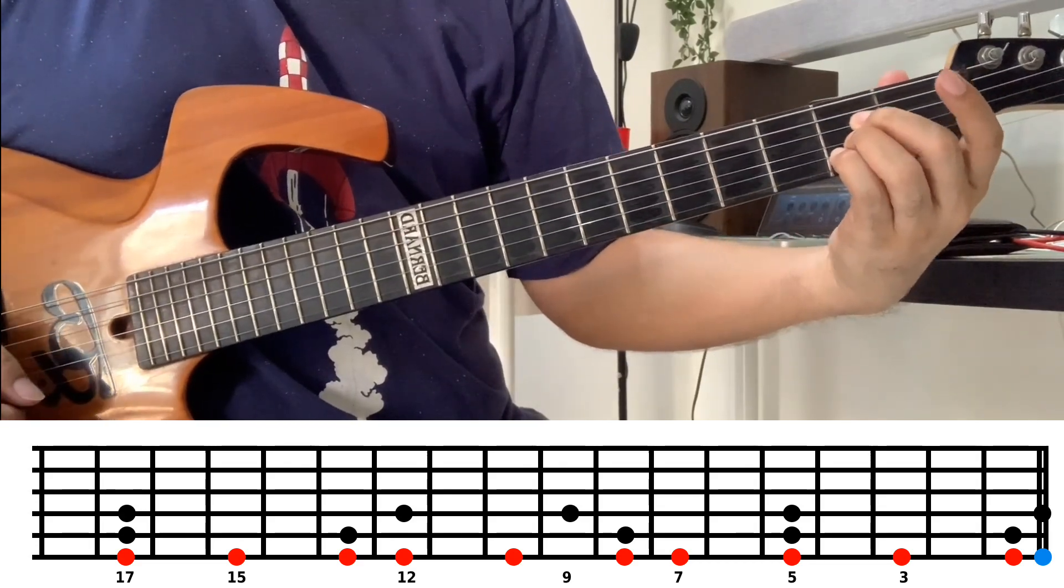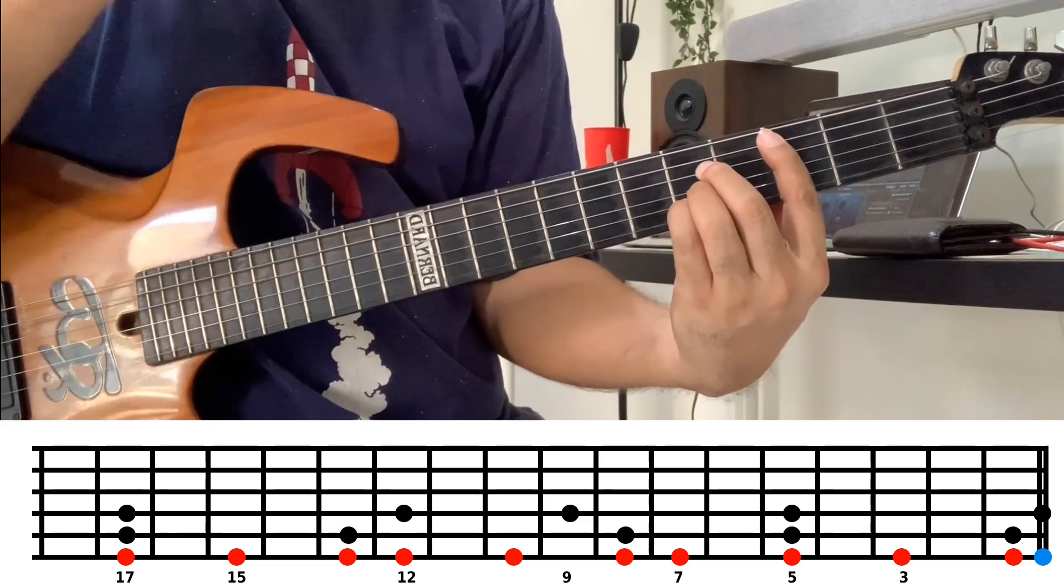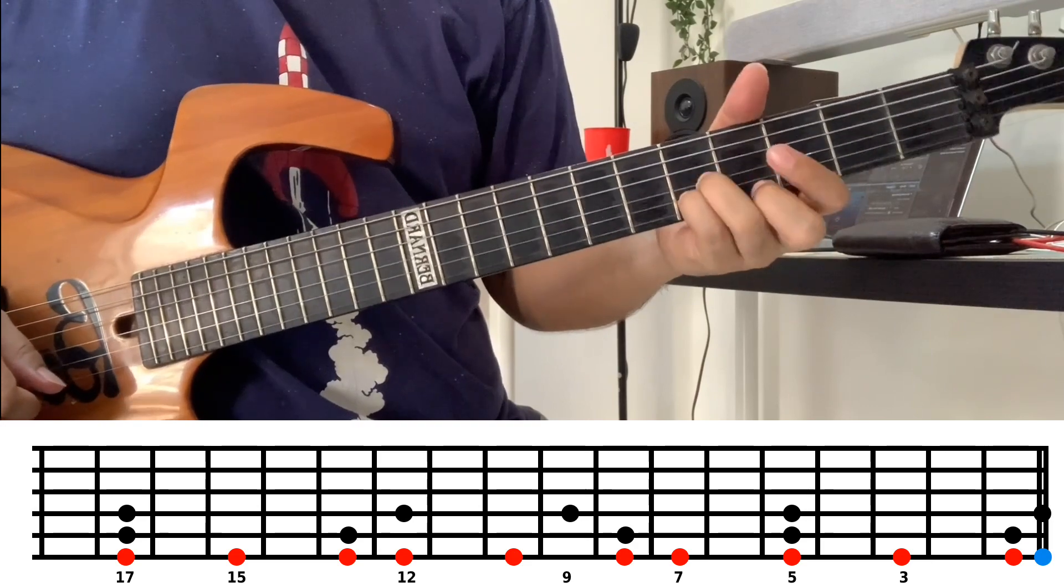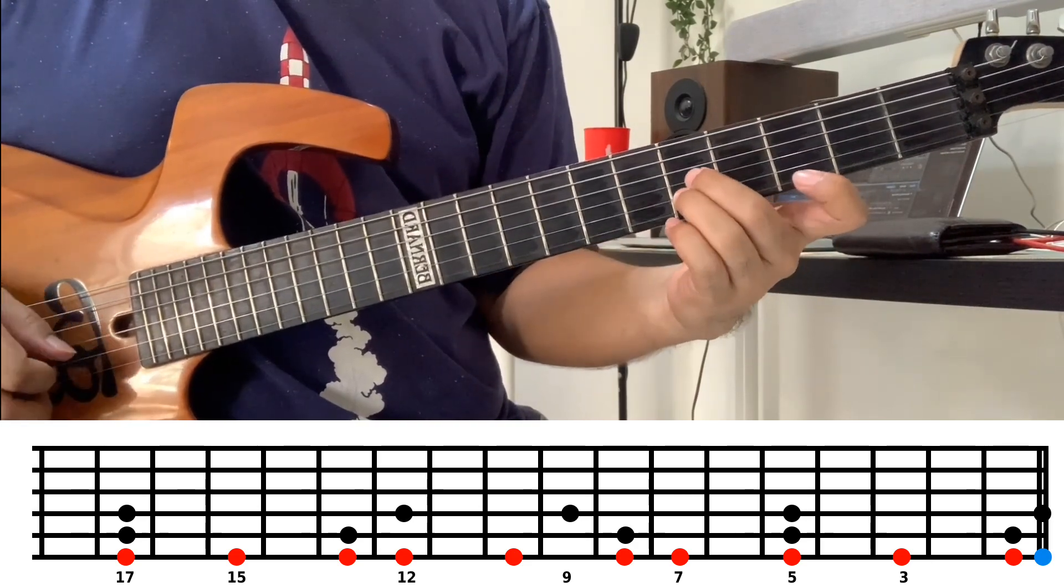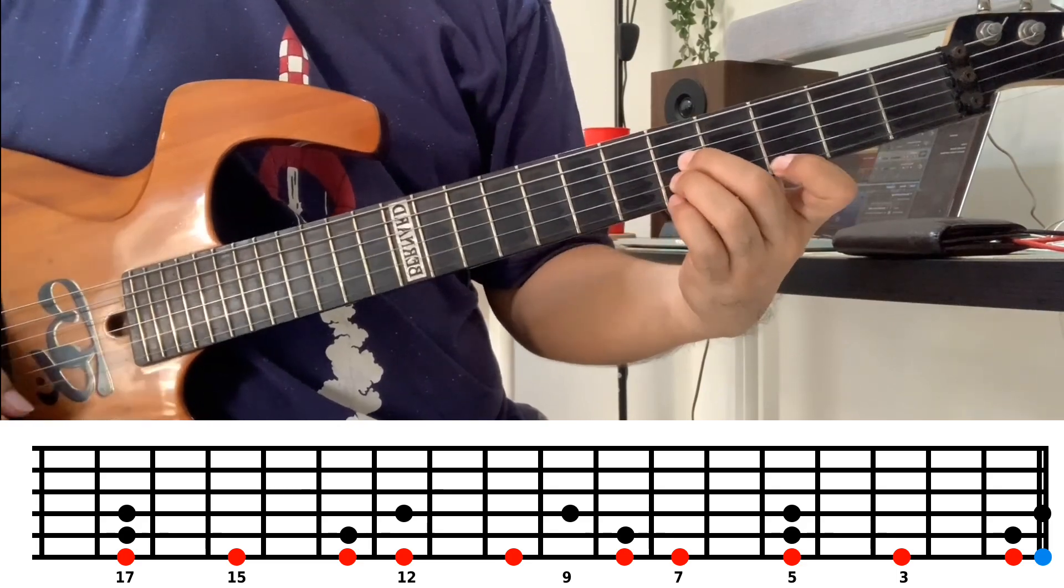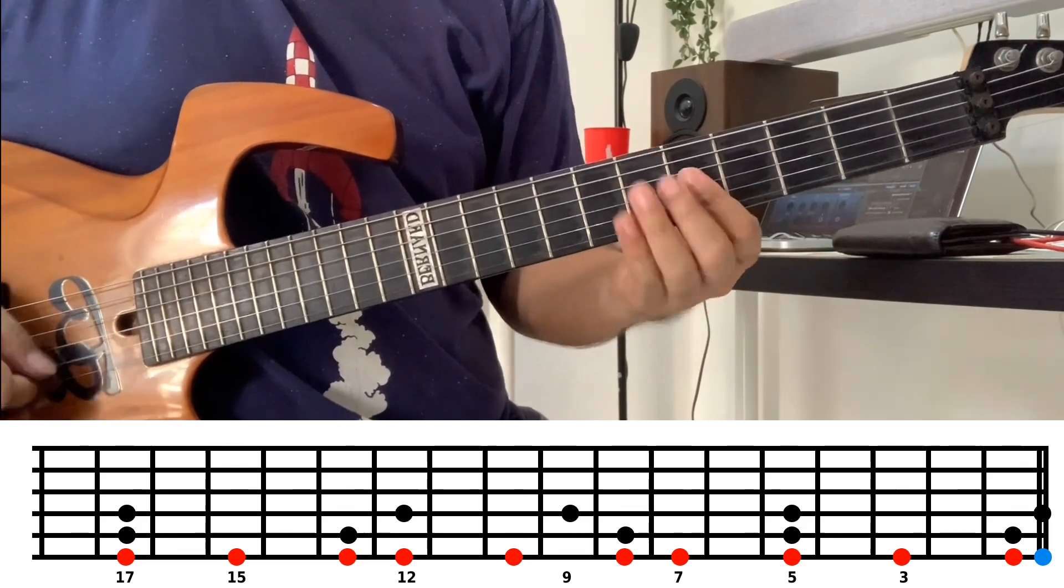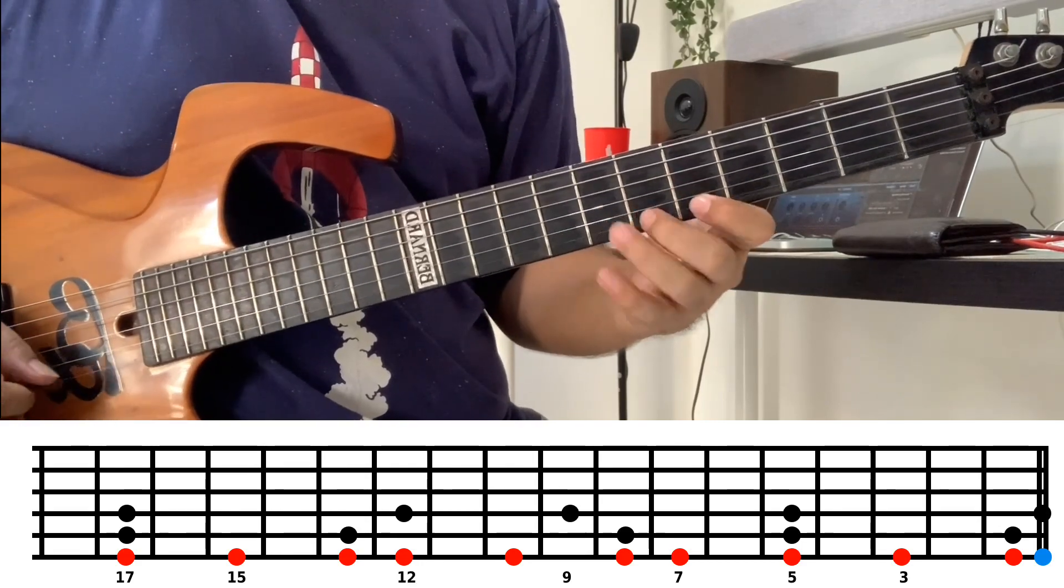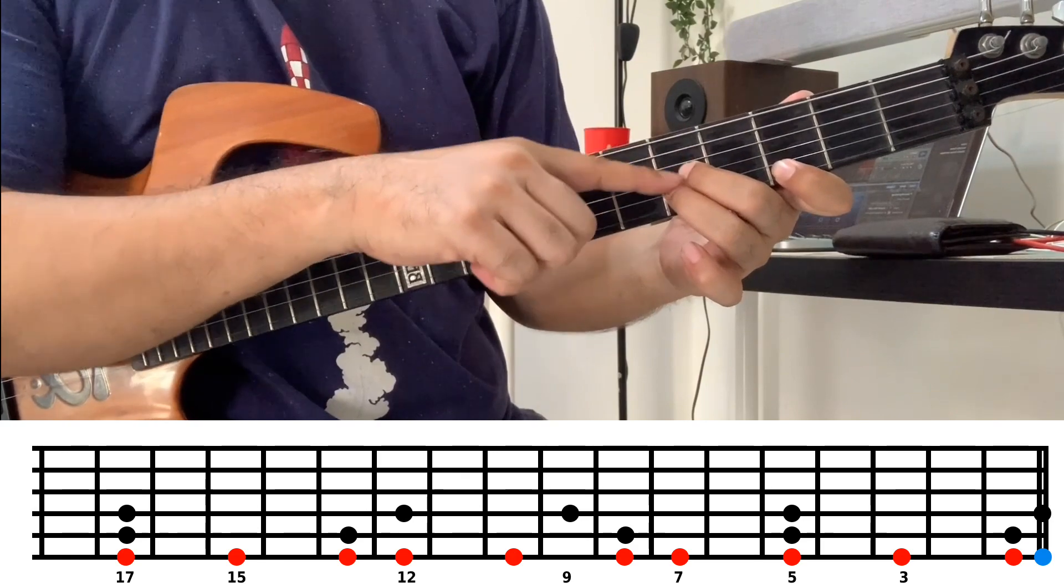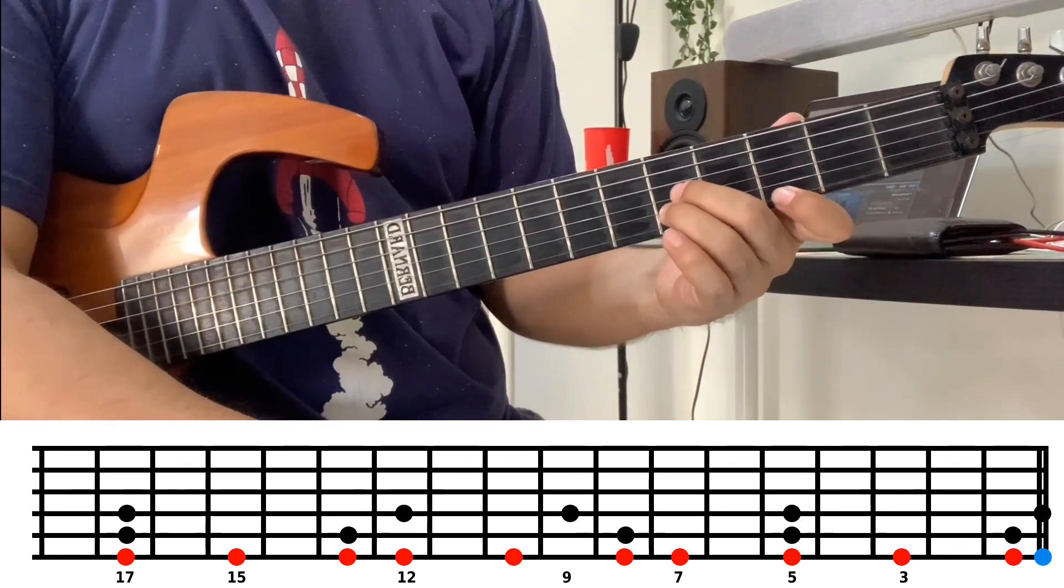This one is like an A chord shape. So A, B, C. You can see, we only use two fingers. You can also try this. Look, that's why we really need to be able to visualize the shape, because our fingers will change.